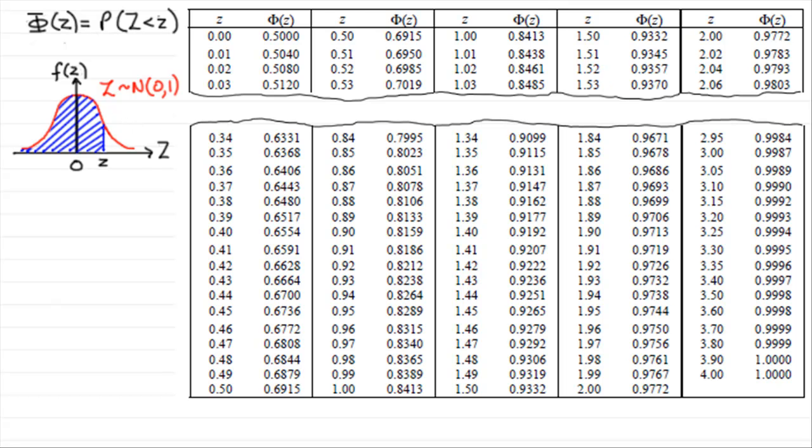Now suppose then that you had to work out this probability here, the probability of z being less than 1.5. What I would need to do then is work out what phi of 1.5 was. Now you don't have to write that. Some people don't. They just live with this, so that's fine.